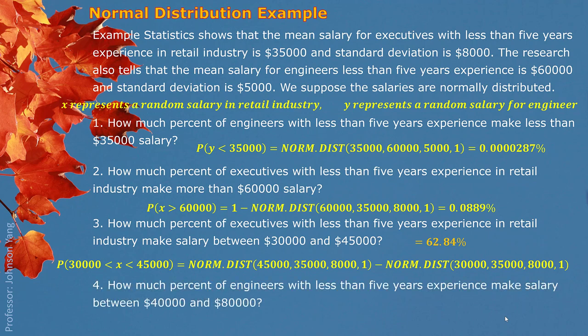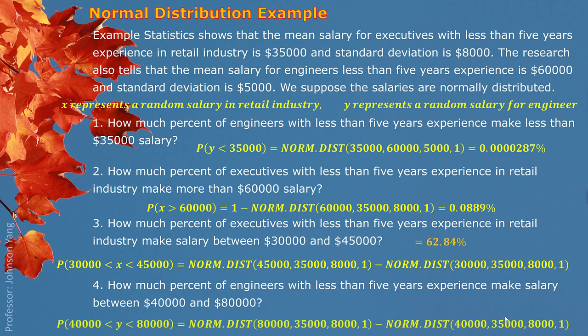Question 4: How much percent of engineers with less than five years' experience make a salary between $40,000 and $80,000? Similarly, we put the engineer information into the Excel function and get the answer: 99.99%. If you remember the empirical rule, $40,000 and $80,000 are already outside the three-sigma zone, so obviously they cover almost all of the engineers' salaries — they should almost all be within this interval.